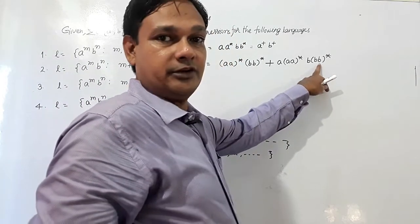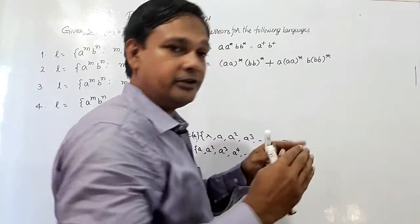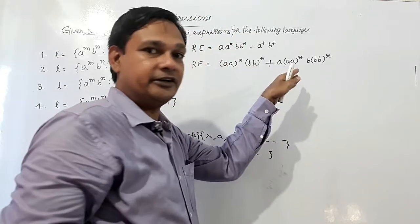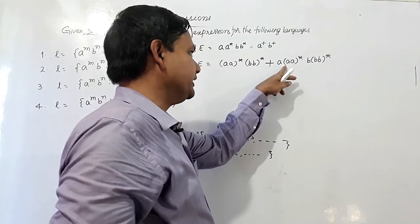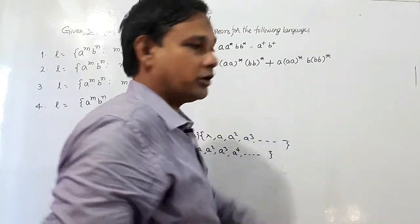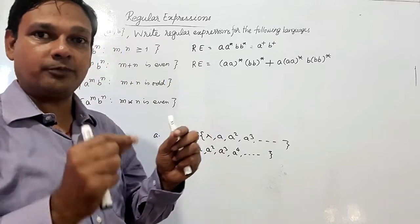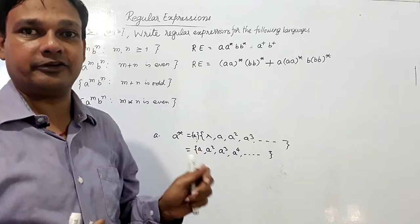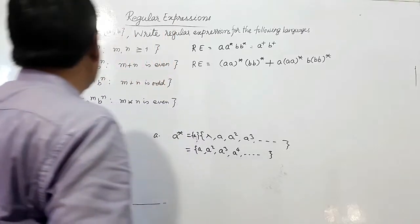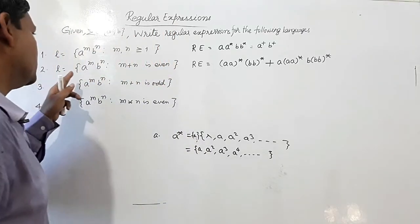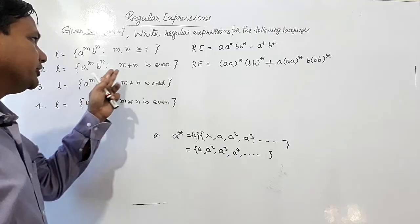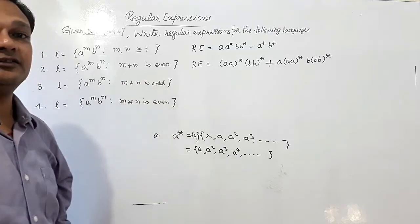This produces an even number of a's and even number of b's, so their sum is even. For the both-odd case, one a is concatenated, giving an odd number of a's, concatenated with one b giving an odd number of b's. Since odd plus odd is always even, this covers the second case. So this is the regular expression for L = a^m b^n where m plus n is even.